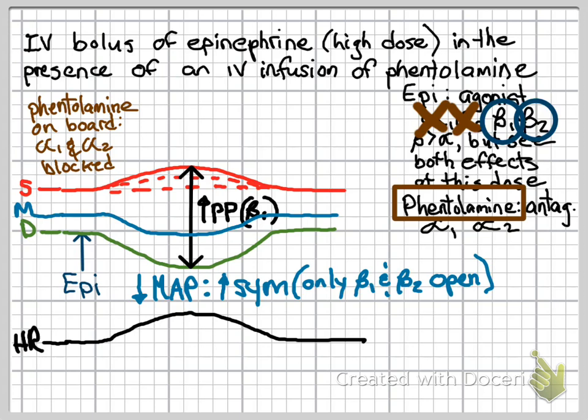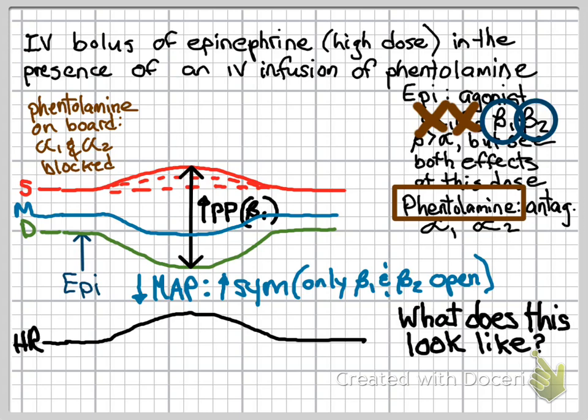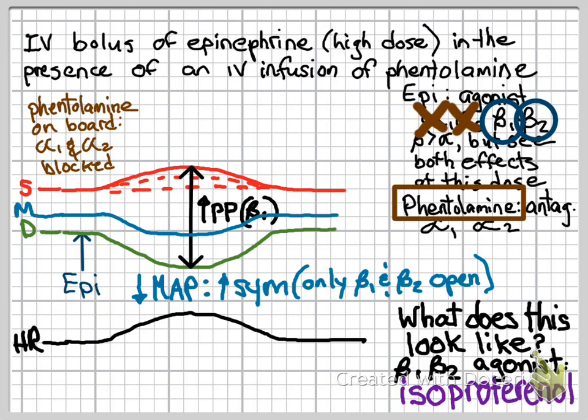We may also see some additional vasodilation. Now, if we think about what this curve looks like, we have our beta-receptors open and our alpha-receptors are blocked. This really sort of looks like what happens in the presence of a non-selective beta-agonist, and so that drug would be isoproterenol. So the bottom line is that the effect of isoproterenol looks a lot like the effect of epinephrine when phentolamine is already present in the system.